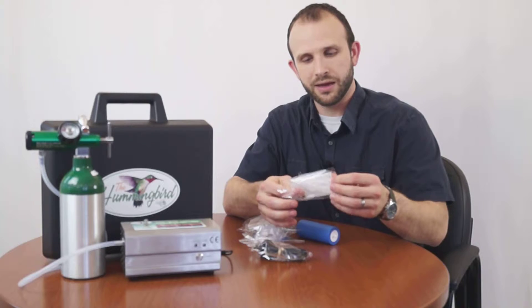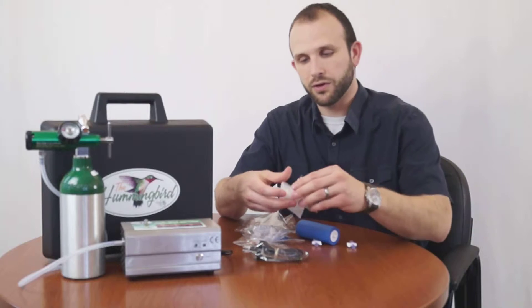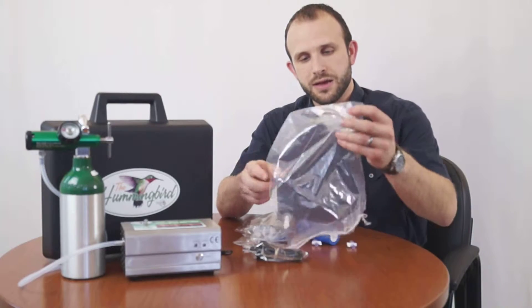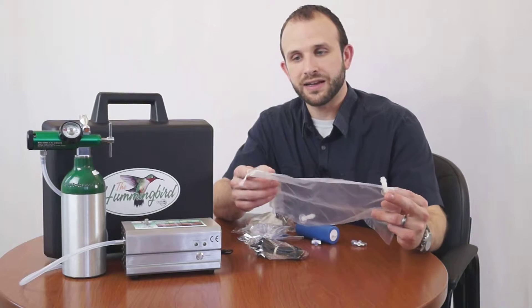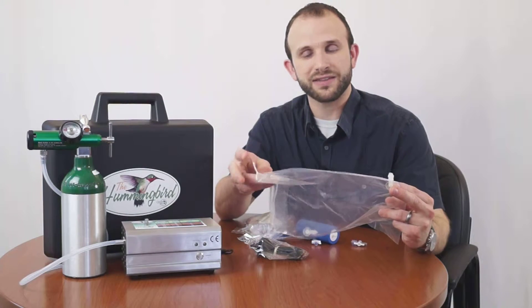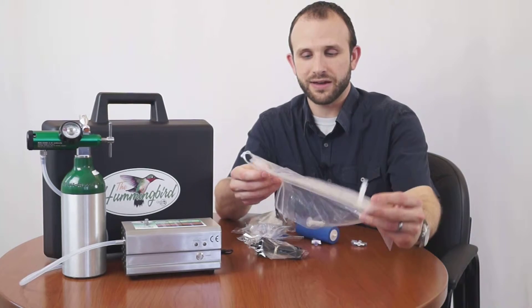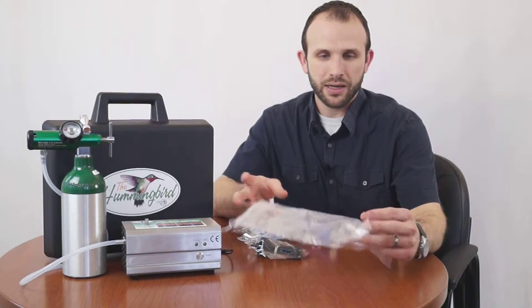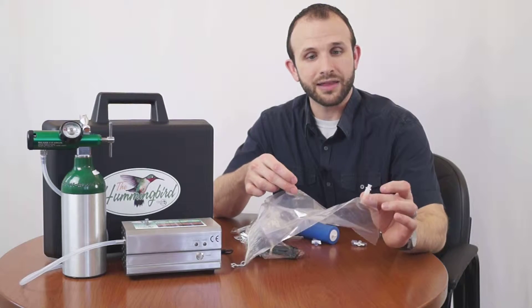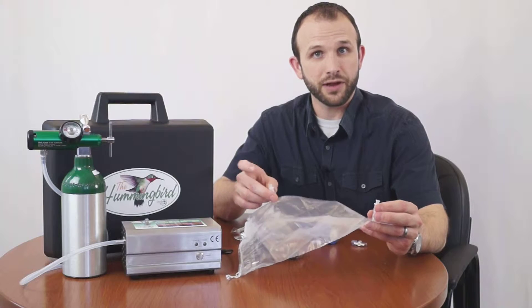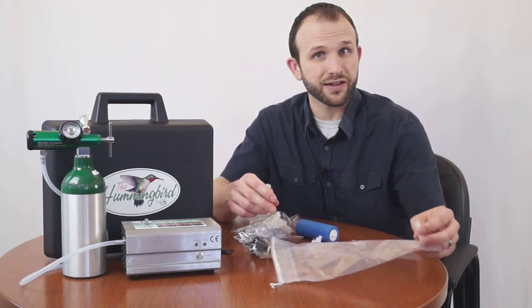We have different sizes, and you'll notice that each size will have a drawstring to help get it situated and sealed once we have it on the limb. You'll have an inlet and an outlet on the bag. The inlet is made for the ozone to come in, and the outlet is what you'll connect your destruct up to.